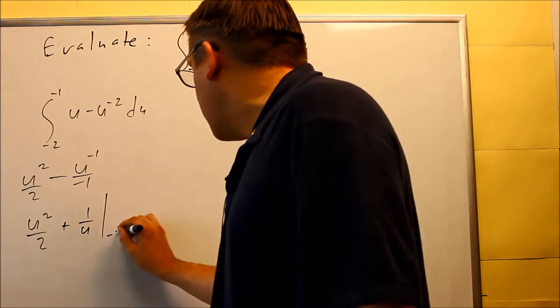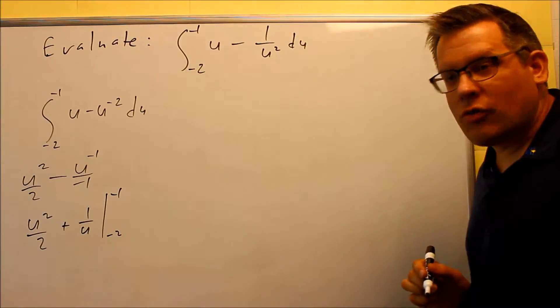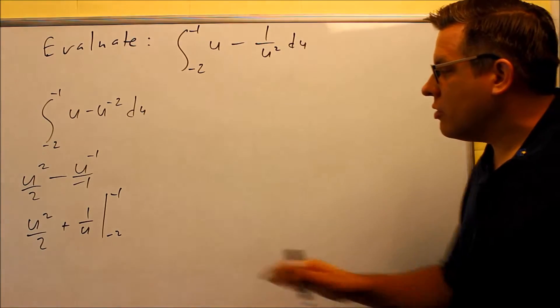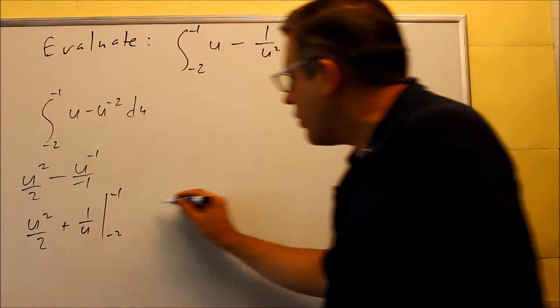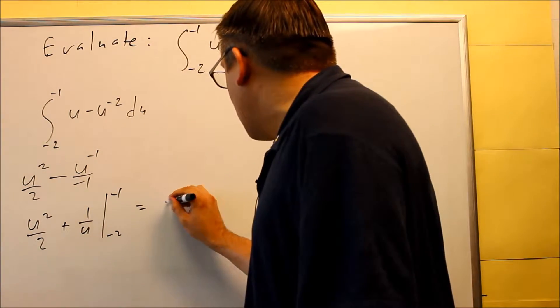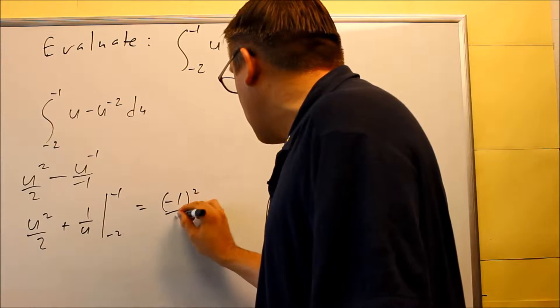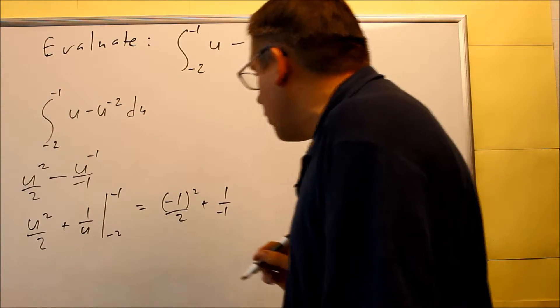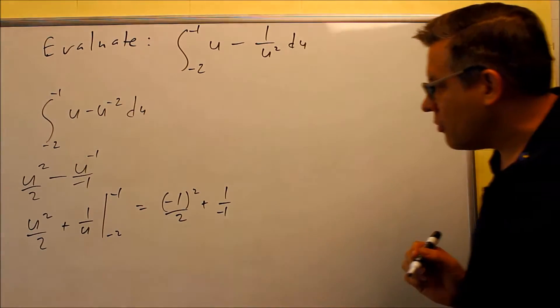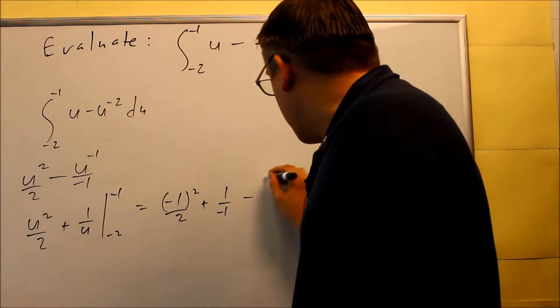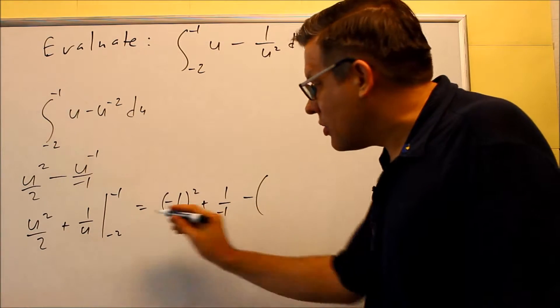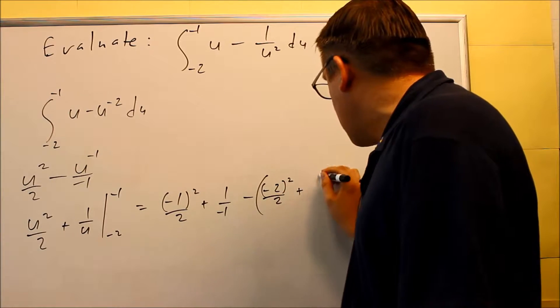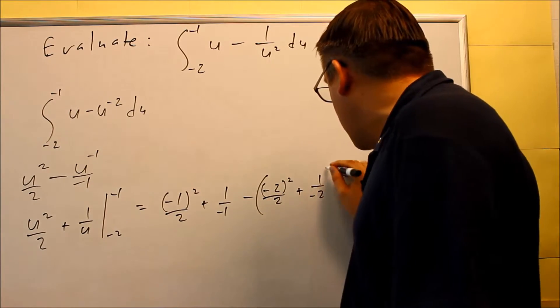We have our line drawn here from negative 2 to negative 1. That means we have the antiderivative complete and we're now ready to plug in the numbers. So I have negative 1, that whole thing is squared, over 2 plus 1 over negative 1. You're subtracting, I'm going to put all this inside parenthesis, negative 2 goes in there, negative 2 squared over 2 plus 1 over negative 2.